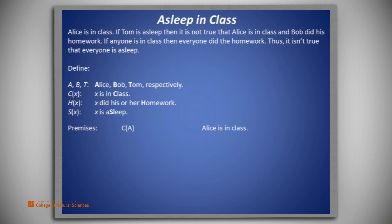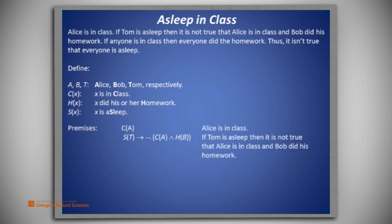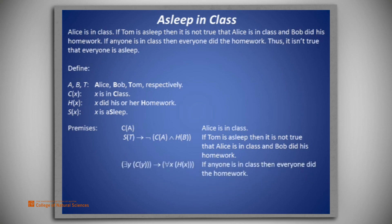From the story and these definitions, we may represent the three premises as: c(a) — that is, Alice is in class; s(t) implies the negation of c(a) and h(b) — that is, if Tom is asleep, then it is not true that Alice is in class and Bob did his homework; and there exists a y such that c(y) implies for all x, h(x) — that is, if anyone is in class, then everyone did the homework.